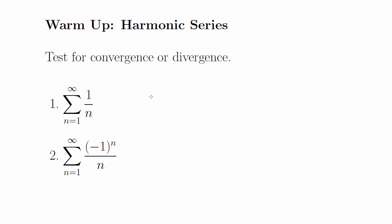Number two is an alternating series, so we can use the alternating series test. First, we take the limit of the nth term as n approaches infinity, and that is equal to 0. So it passes the first criteria.